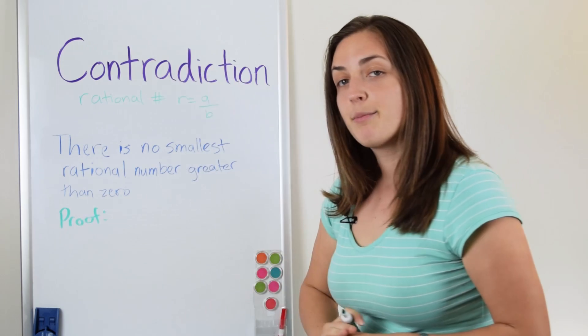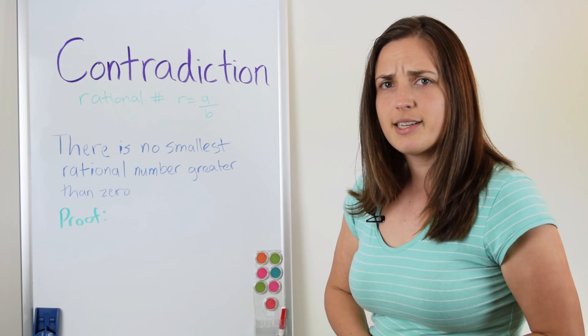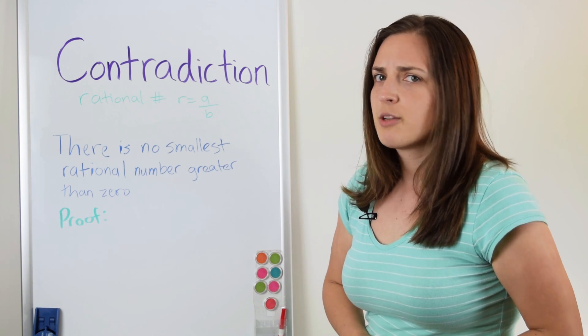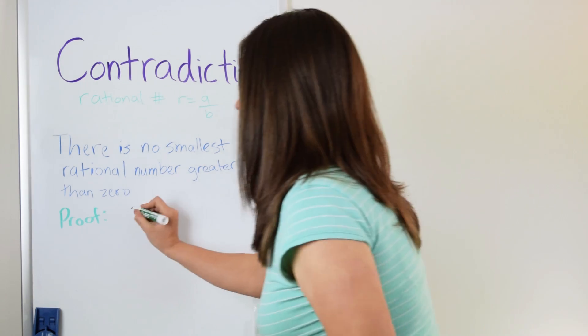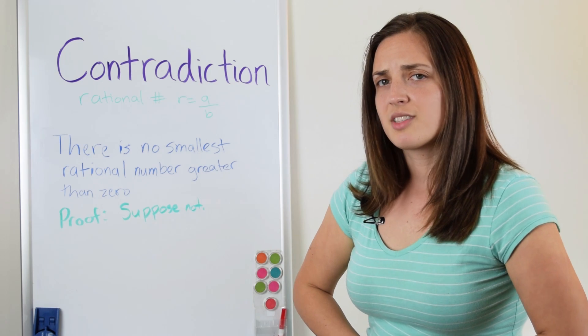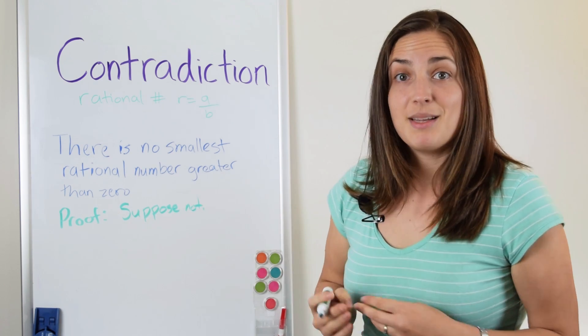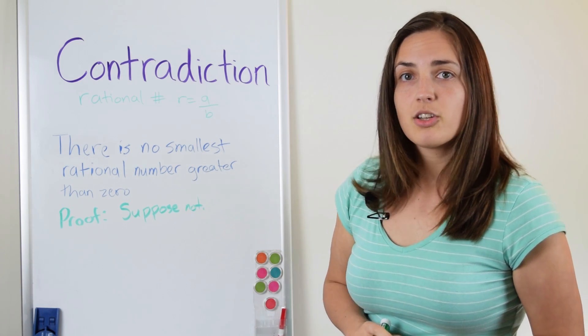Proof. In a proof by contradiction, we often start by saying suppose not. When we say suppose not, we really mean suppose that this statement we are trying to prove is not true. Okay, we've supposed that the statement is not true. That means that there is a smallest rational number bigger than zero. So let's write that down. So then there is a smallest rational number, let's call it r, bigger than zero.